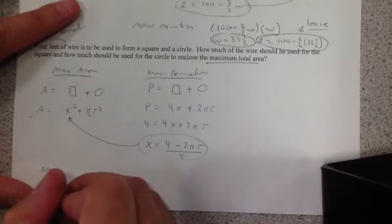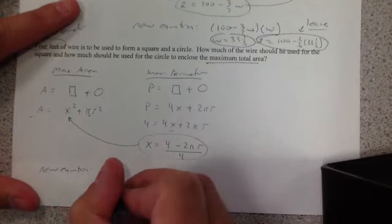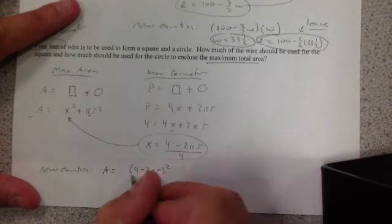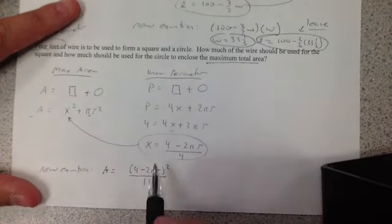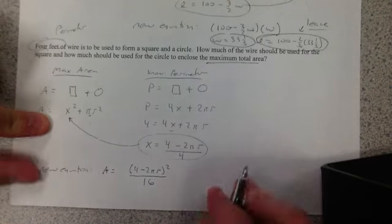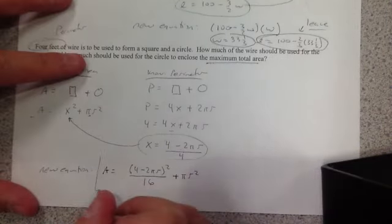And this gives me my new equation here. So my new area equation becomes all of the squares. That becomes 4 minus 2 pi r squared over 16. Now you might be asking, where did you get to 16? Well, I just squared the bottom. I don't have to put all of them there. Plus pi r squared. This is the equation.